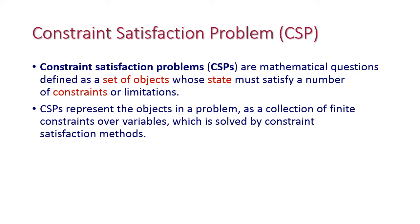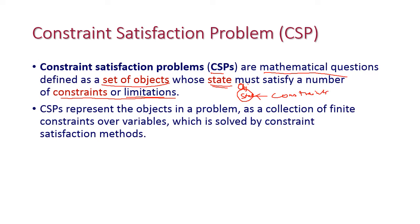Constraint Satisfaction Problems are mathematical questions defined as a set of objects whose state must satisfy a number of constraints, which are otherwise called limitations. We have a set of objects, and each object's state should satisfy the constraints. Based on the satisfaction of these constraints, we assign a particular state to the object.